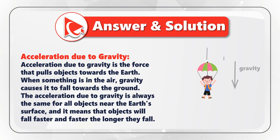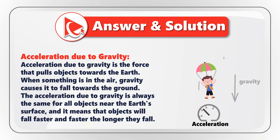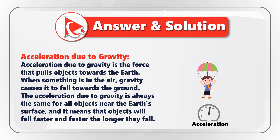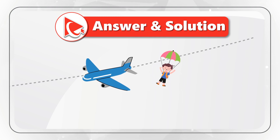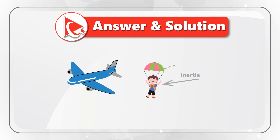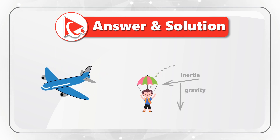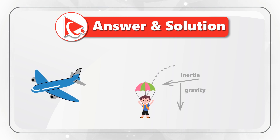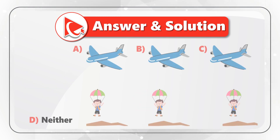Acceleration due to gravity is the force that pulls objects toward the earth. When something is in the air, gravity causes it to fall toward the ground. The acceleration due to gravity is the same for all objects near the earth's surface, meaning objects fall faster and faster the longer they fall. After jumping, the parachutist initially maintains horizontal velocity due to inertia, then accelerates downward due to gravity until reaching terminal velocity. Deployment of the parachute increases air resistance, allowing for controlled descent and a safe landing.